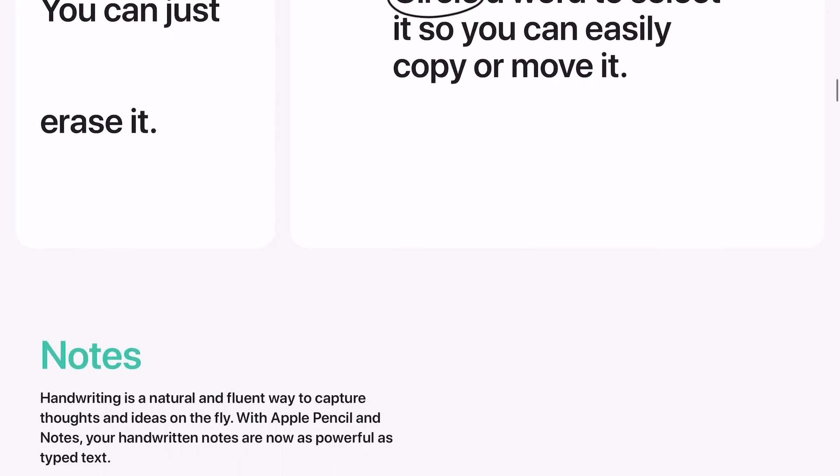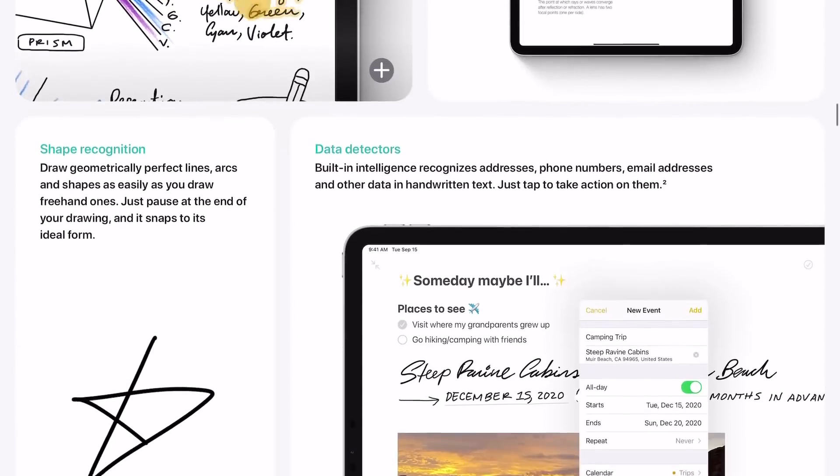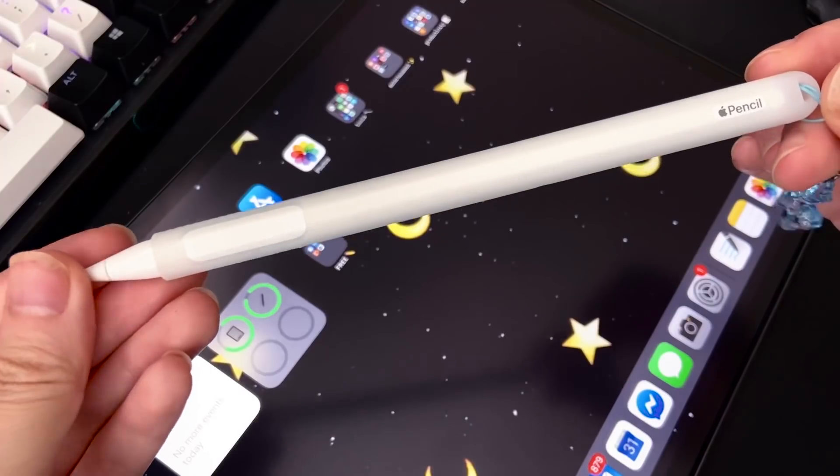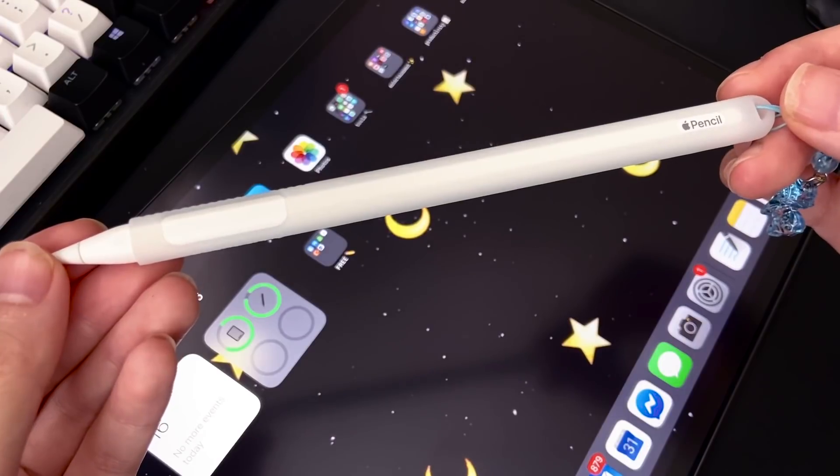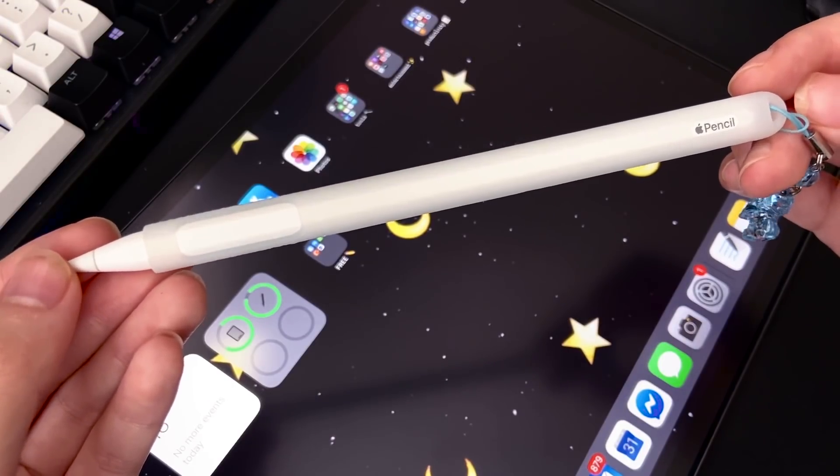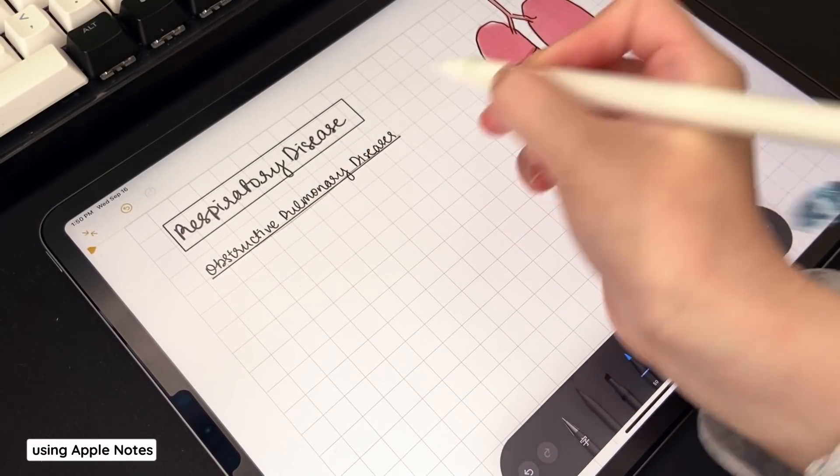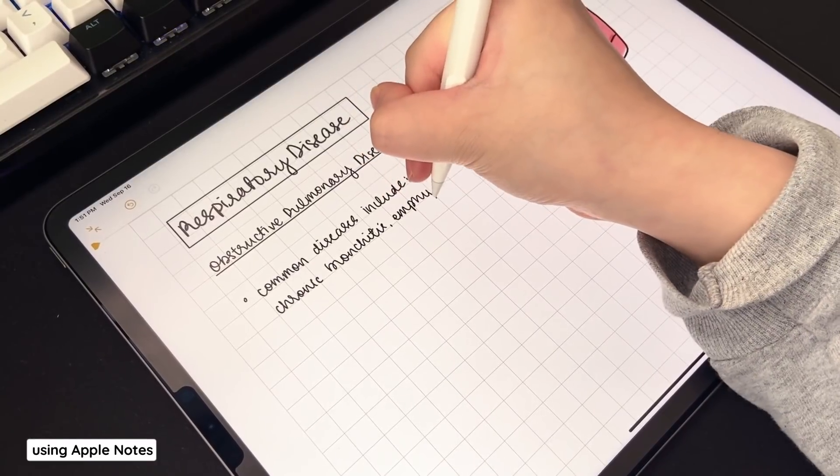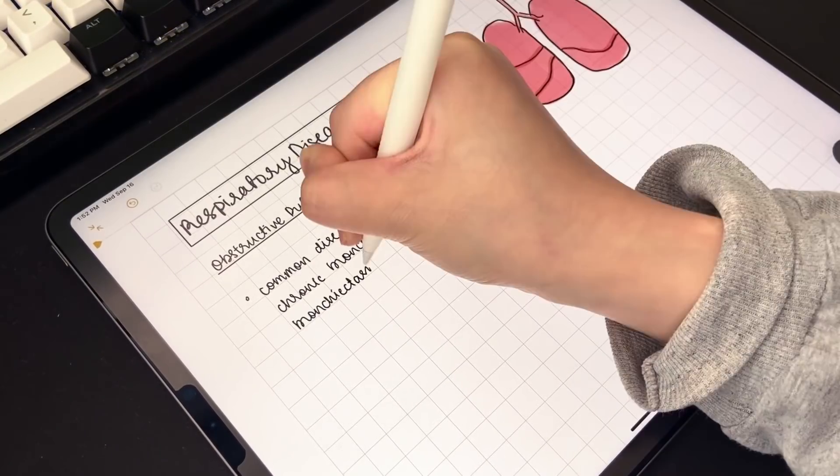This time around, there are lots of new features for the Apple Pencil, including Scribble, which I will demo in this video. Right now, most note-taking features aside from Scribble are only available in the stock Notes app, but I'm really hoping note-taking developers will be able to implement these into their apps, so let's take a look.